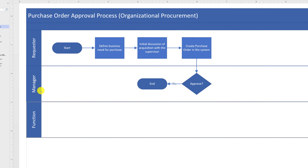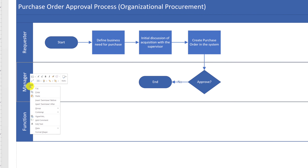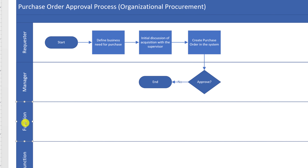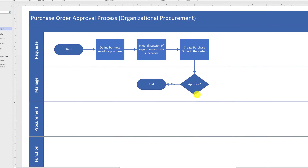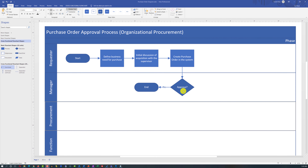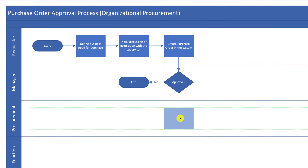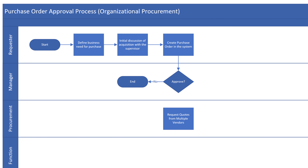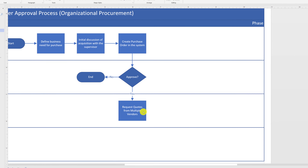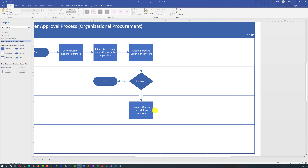To give the diagram a title, double-click the existing title and type the new name. Typically, the procurement department starts by requesting quotes from multiple vendors — add a process step in the procurement swim lane, give it a title, and connect it to show it happens after the manager approves. Procurement is also responsible for selecting the vendor, reflected as a separate shape in the procurement swim lane.